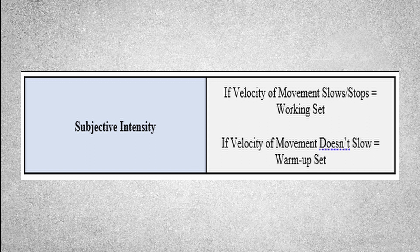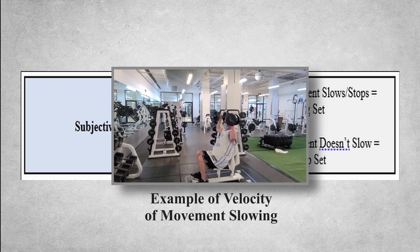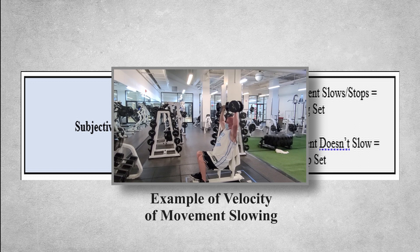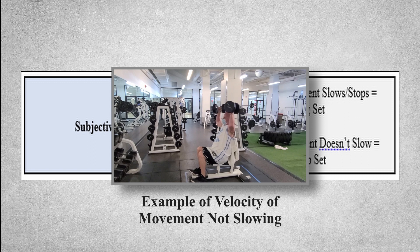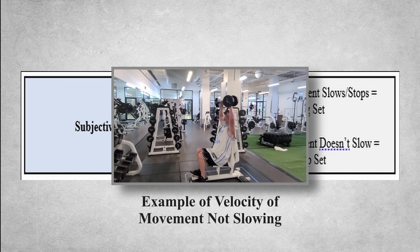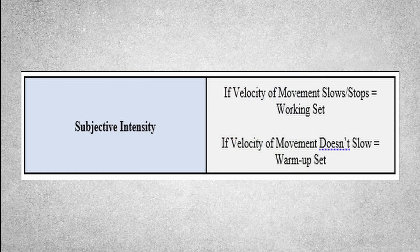I'm going to go over this in much more detail in another video on subjective intensity, where I'll talk about what's called the RPE method. But in a nutshell, if the velocity of movement of the last repetition or the last several repetitions slowed towards the end of the set, then the set was technically a working set. And if the velocity or speed of the movement of each repetition in the set was the same as each repetition that preceded it, then it was a warm-up set — it doesn't matter if you thought it was a working set. Ultimately, what it comes down to is the velocity of movement and whether or not it slowed.